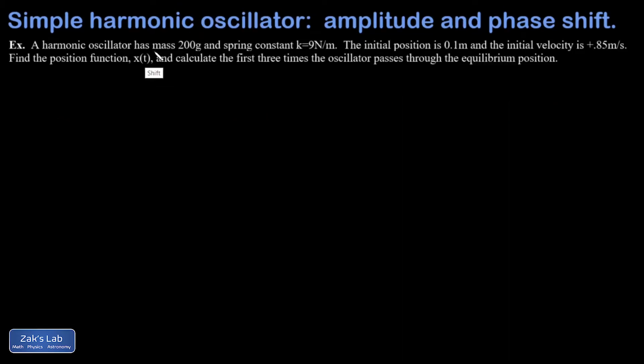So in this example, I have an oscillator with mass 200 grams, spring constant 9 newtons per meter. I'm given some initial conditions here, initial position and velocity, and this is not simple. My initial conditions have me away from the equilibrium position and also moving.